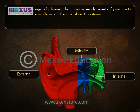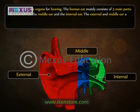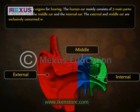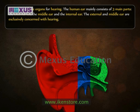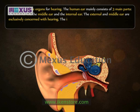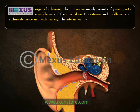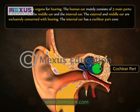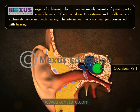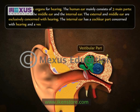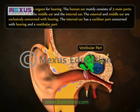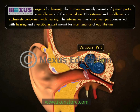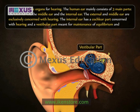The external and middle ear are exclusively concerned with hearing. The internal ear has a cochlear part concerned with hearing and a vestibular part meant for maintenance of equilibrium and posture.